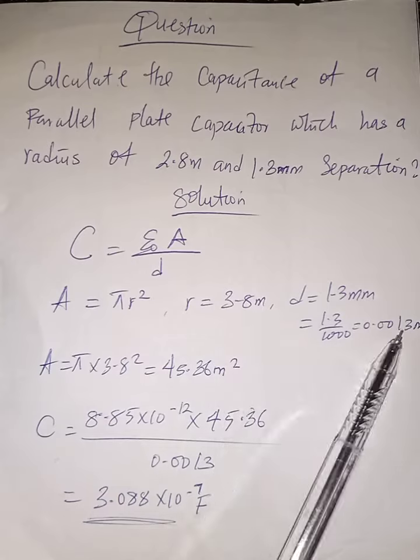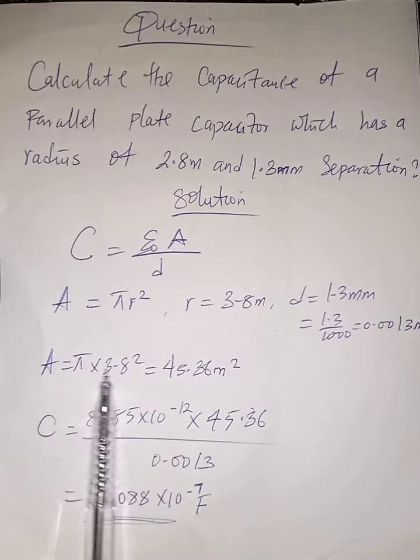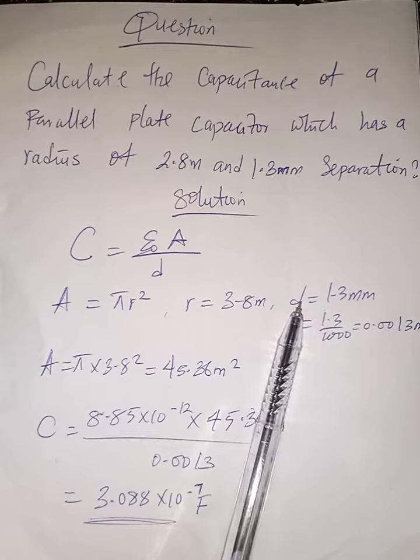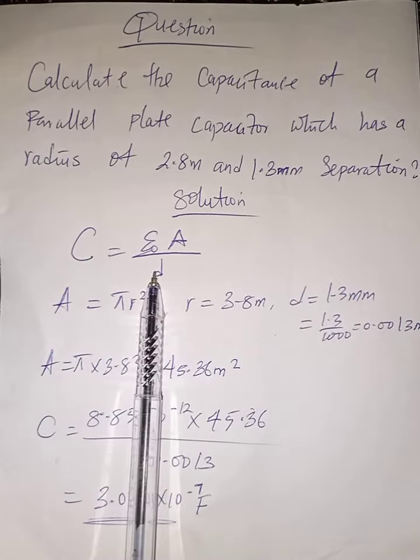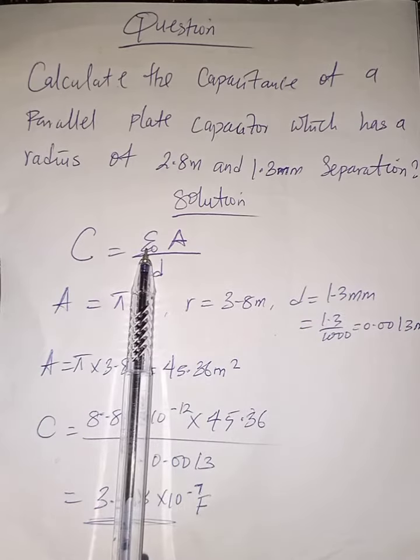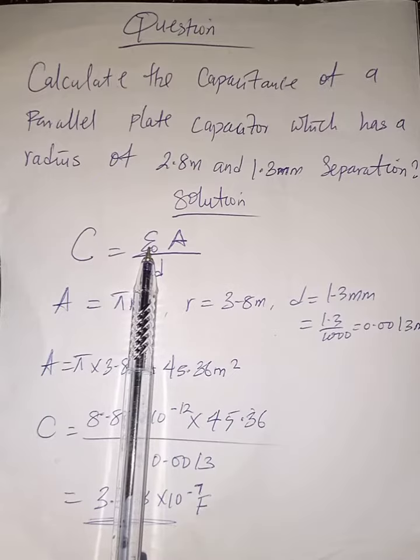Then substitute your values. We're going to have π times 3.6² for the area. The separation is d, and the permittivity of free space is 8.85×10⁻¹². This is how you calculate the capacitance of a parallel plate capacitor.